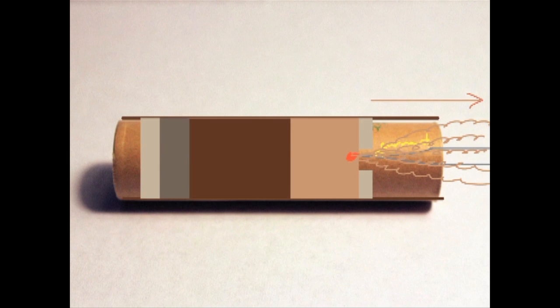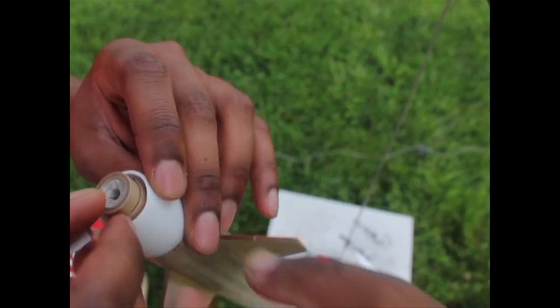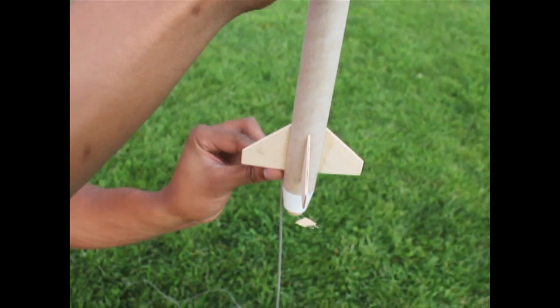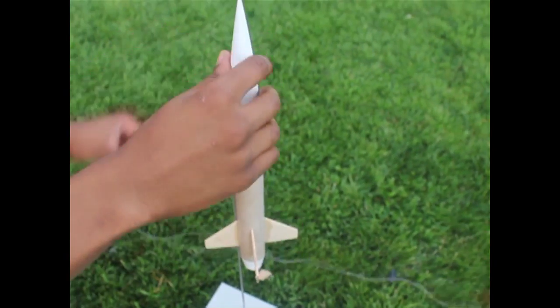This results in a continuous ejection of fuel downwards, which is what propels the rocket upwards. And that's it. Now that we understand the theory of how a rocket works, let's take a look at a real rocket launch in action.